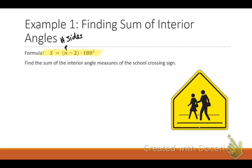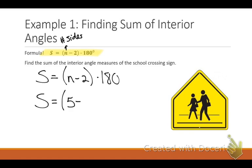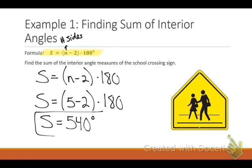Let's look at this pedestrian crosswalk sign. Let's count how many sides it has: one, two, three, four, five. A five-sided polygon is a pentagon. Because it has five sides, I use my formula: N minus two times 180. I plug in five for N. Five minus two is three — you can do that mental math. Use your calculators to multiply by 180. Three times 180 is 540 degrees, and that's the sum of the interior angles of a pentagon.